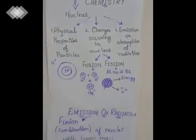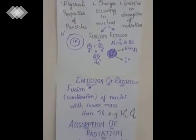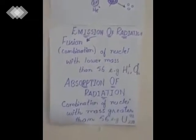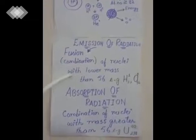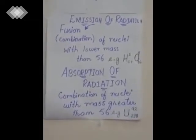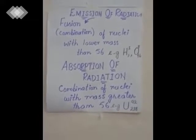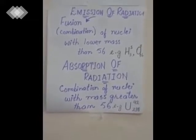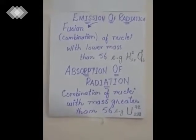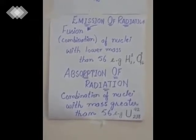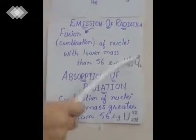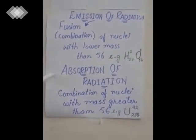The third aspect is the emission or absorption of radiation from the nucleus. Emission of radiation occurs when nuclei with atomic mass lower than 56 combine together — they always emit energy. For example, hydrogen has atomic mass 1 and oxygen has atomic mass 16. When such nuclei combine, they emit energy.